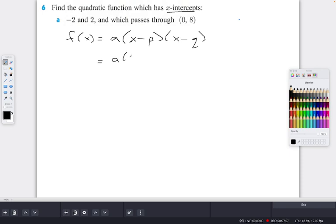You can go a times (x - (-2)), so I'll put that in brackets so I don't mess up my negative sign. And then (x - 2). So this is your p and this is your q. This is y here again, so let's change that to y. At this point you have to find your a.